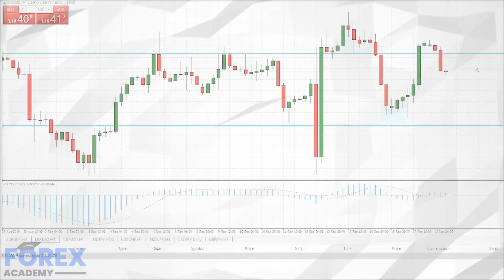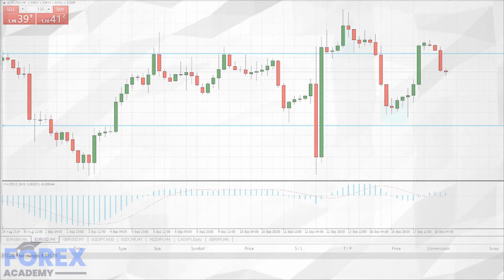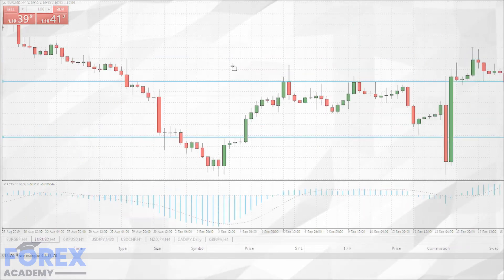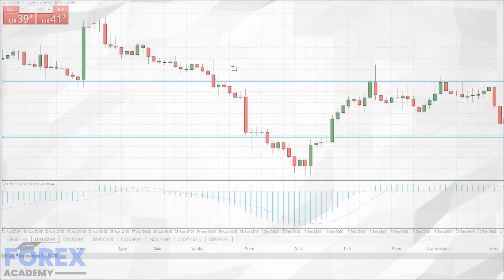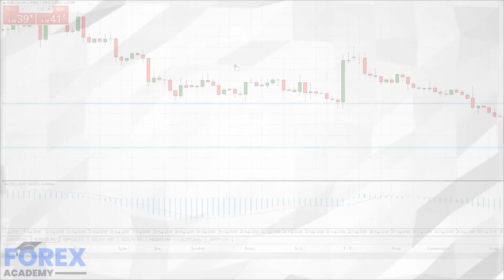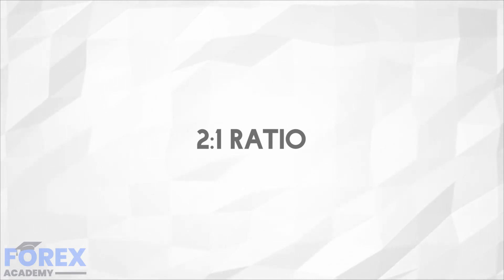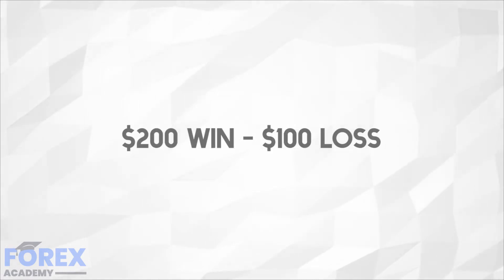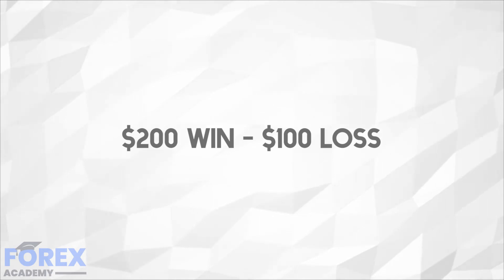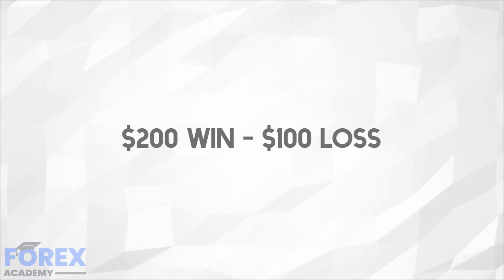To be a successful forex trader, it is a simple matter of mathematics. You need to win more trades than you lose and those losses should be less than your wins. Therefore, you should aim for a minimum of 2 to 1 as a ratio. For example, you should be aiming to win $200 for every $100 loss. This is considered to be a positive risk-to-reward ratio and will be a minimum required for you, coupled with more winning trades than losers.